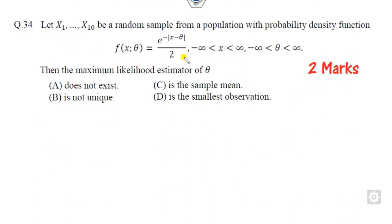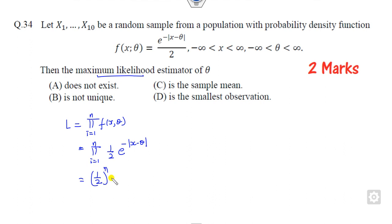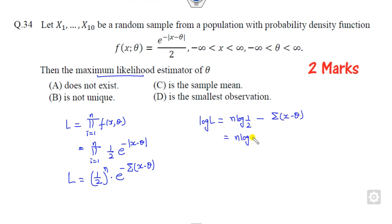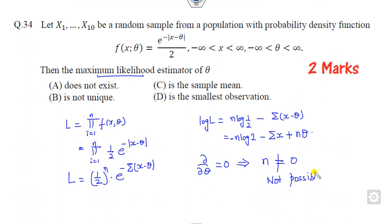Now look at question 34, again worth two marks. You have to find the MLE. First, find the likelihood function L for this distribution. Substituting the PDF, you get one-half raised to N times e raised to the power of the negative summation. Taking the logarithm for simplification, you get N log(1/2) minus the summation term plus N theta. Now taking the partial derivative with respect to theta, you get N equals 0, which is not possible.